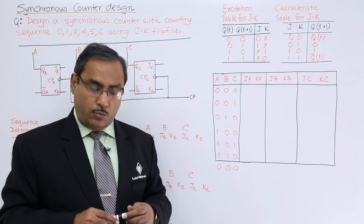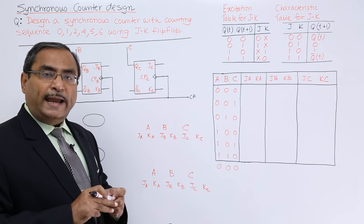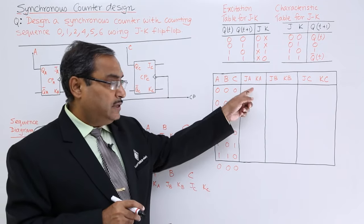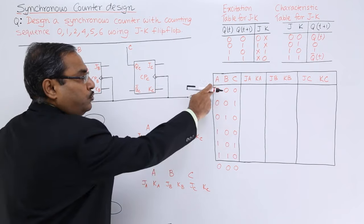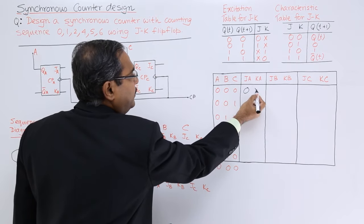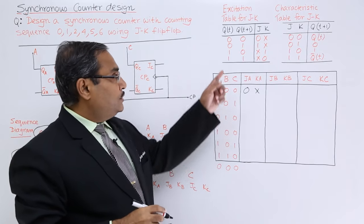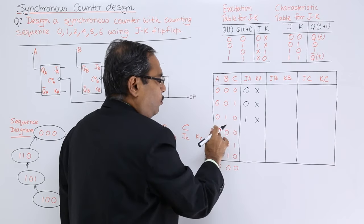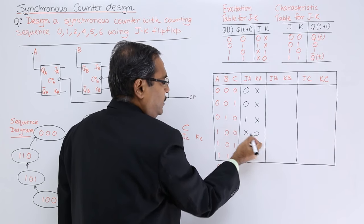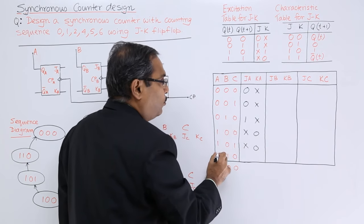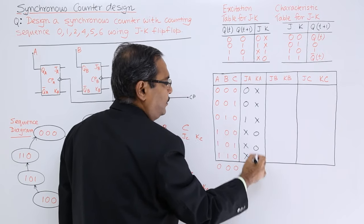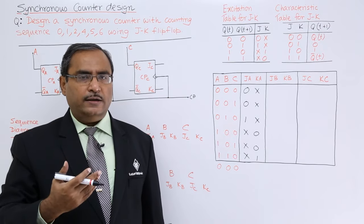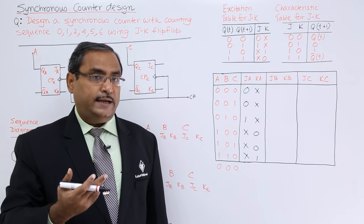Now we go for the counter design using the excitation table. For the A column, we fill JA and KA: the 0→0 transition gives 0x, the 0→1 transition gives 1x, the 1→1 transition gives x0, and the 1→0 transition gives x1. In this way JA and KA columns are filled. Similarly, we fill JB, KB, JC, and KC columns for the B and C flip-flops.